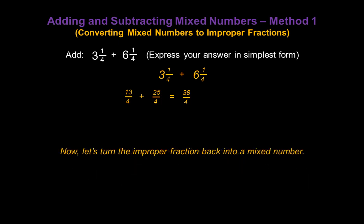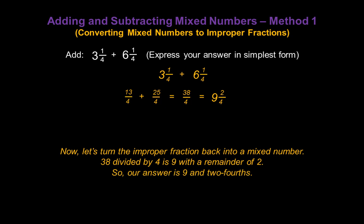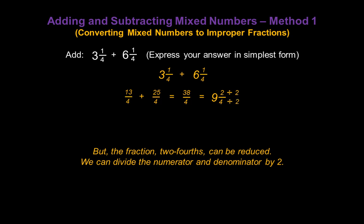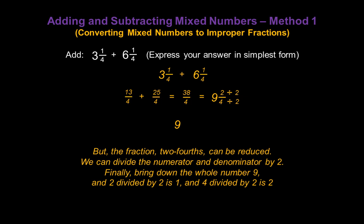Now let's turn this improper fraction back into a mixed number by dividing. Thirty-eight divided by four is nine, so nine is the whole number portion of our answer, with a remainder of two. So two becomes the numerator of our fraction, giving us nine and two-fourths. But two-fourths can be reduced — divide numerator and denominator by the common factor two. Bring down the nine: two divided by two is one, four divided by two is two, so our final answer is nine and one-half.